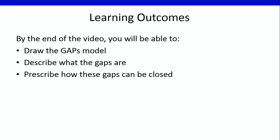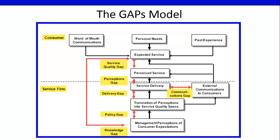The GAPS model is one that allows us to identify and correct service quality problems. There are a total of 6 types of GAPS that can occur at different points during the design and delivery of a service performance. Let's look at each of these GAPS in more detail.